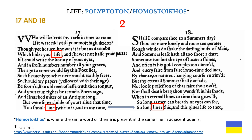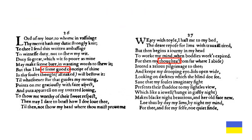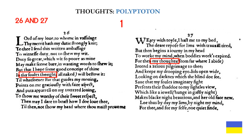Homo stoikos: the same word or theme is present at the same line in adjacent poems. Here is the second form of homo stoikos and polyptoton: the plural of I is in sonnet 17 and the singular form is in sonnet 18, and they both appear in line 5. Sonnets 26 and 27 are connected through the word thought or thoughts — an example of polyptoton. Thy soul's thought in sonnet 26 connects to my thoughts in sonnet 27.